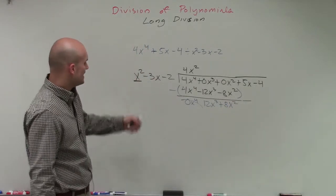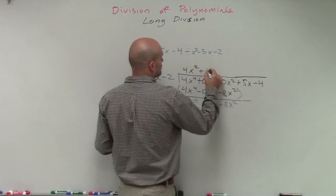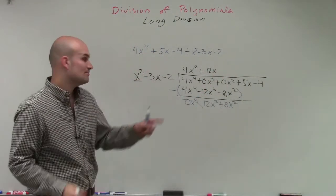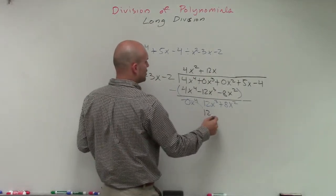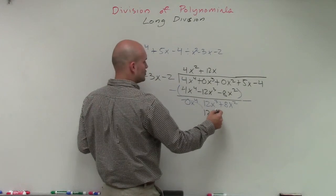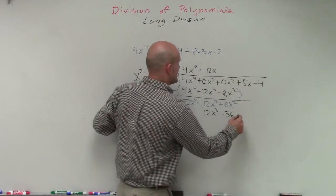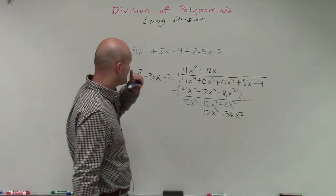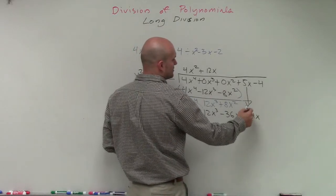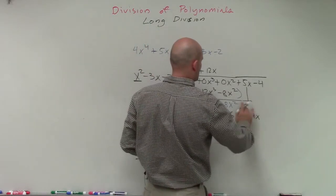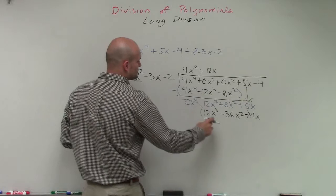All right. Then we go ahead and go back through the division again. So x squared divides into 12x cubed, a positive 12x times. Now we need to make sure we multiply that times each and every one of our terms. So 12x times x squared is going to be 12x cubed. 12x times a negative 3x is going to be a negative 36x squared. And 12x times negative 2 is going to be a negative 24x. Then we can see to subtract these, I need to bring down a positive 5x. So now let's go ahead and subtract the rows.